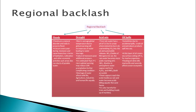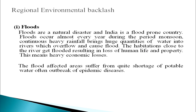Let us review some examples of backlash at the regional level. In many areas humans are suffering environmental backlash. Regional backlashes: one is floods. Floods are a natural disaster and India is a flood-prone country. Floods occur almost every year during the monsoon period. Continuously heavy rain brings huge quantities of water into rivers which overflow and cause flooding. Habitations close to rivers get flooded, resulting in loss of human life and property, meaning heavy economic losses. Flood-affected areas also suffer from shortage of potable water and often outbreak of epidemic diseases.